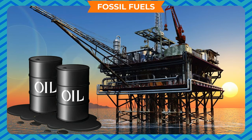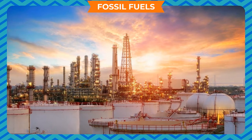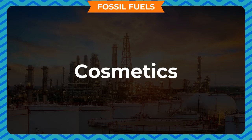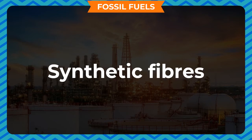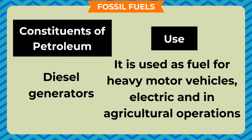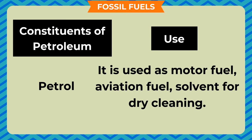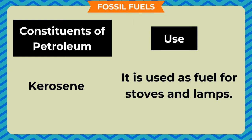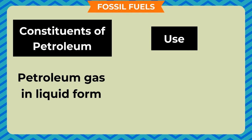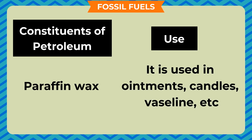Petroleum is often referred to as black gold. The useful substances obtained from petroleum and natural gas are called petrochemicals. Petrochemicals provide raw materials for the preparation of a large number of substances; they are used to make medicines, ointments, cosmetics, synthetic rubber and synthetic fibers. Diesel is used as fuel for heavy motor vehicles, electric generators and in agricultural operations. Petrol is used as motor fuel, aviation fuel and solvent for dry cleaning. Kerosene is used as fuel for stoves and lamps. Petroleum gas in liquid form (LPG) is used as fuel for home and industry. Lubricating oil is used in lubrication of machine parts. Paraffin wax is used in ointments, candles, Vaseline, etc.